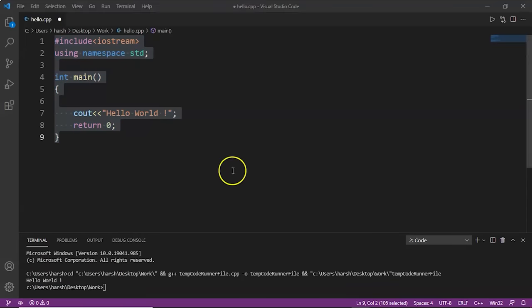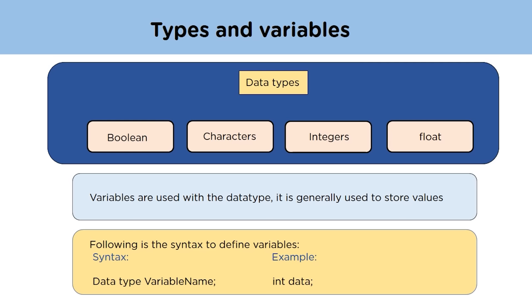Now let's move to our next topic — types and variables. In C++ there are different data types that act as keywords responsible for defining a variable. The first is the boolean data type.